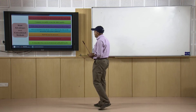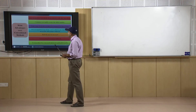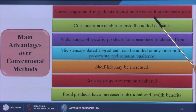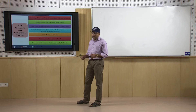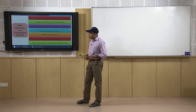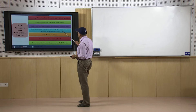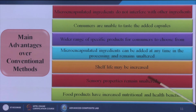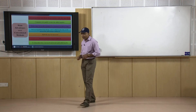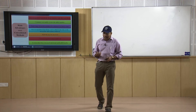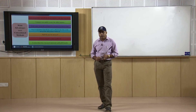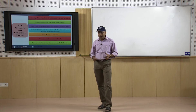In a broader view, the main advantages over conventional methods are: microencapsulated ingredients do not interfere with other ingredients — this is the beauty of the technique, it is like targeted outcomes. Consumers are unable to taste the added capsules, and there is a wider range of specific products for consumers to choose from. Microencapsulated ingredients can be added at any time in processing and remain unaltered. Shelf life may be increased, sensory properties remain unaltered, and food products have increased nutritional and health benefits. The main advantage is that microcapsules can be used widely in biomedical applications, food packaging, food applications, and medical applications.